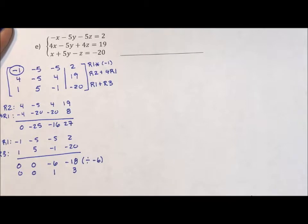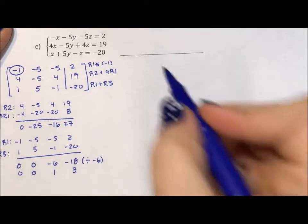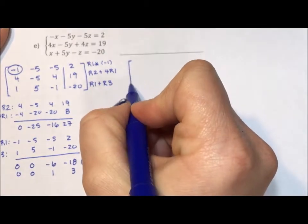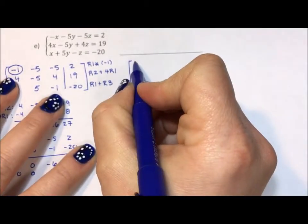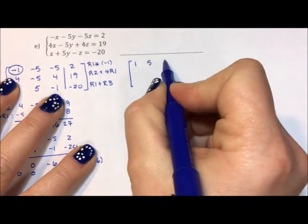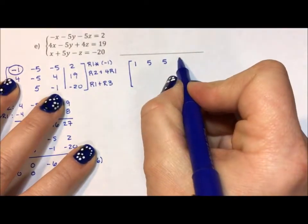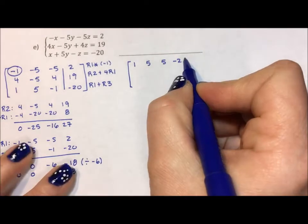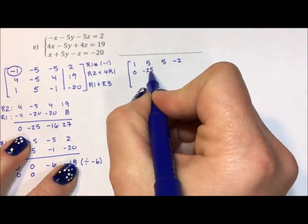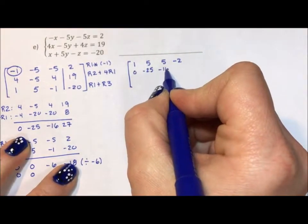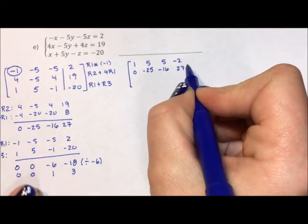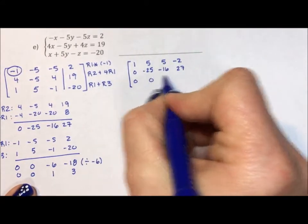I am going to take this and put it back into a matrix. So my first row is going to become 1, 5, 5, -2. My second row is going to become 0, -25, -16, 27. My third row is going to be 0, 0, 1, 3.